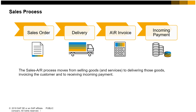SAP Business One efficiently moves all relevant information from one document to the next in the document flow. According to the business needs, you can choose which documents to include as your process steps. The only mandatory document in sales is the AR invoice.